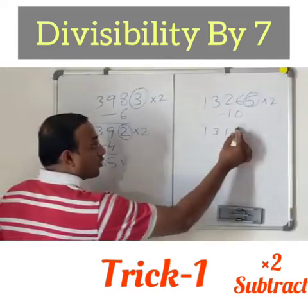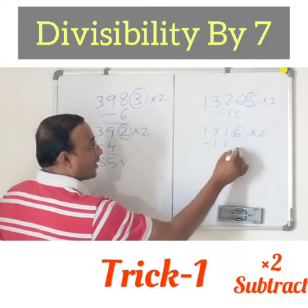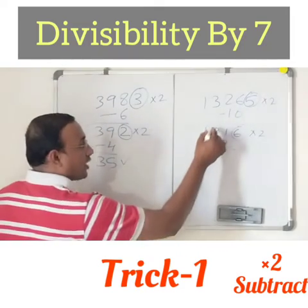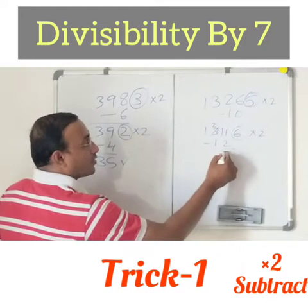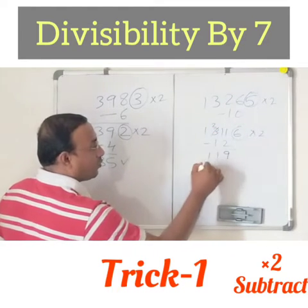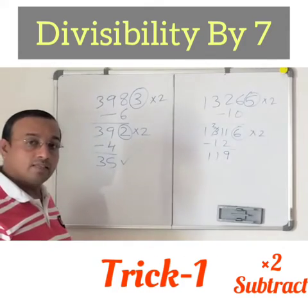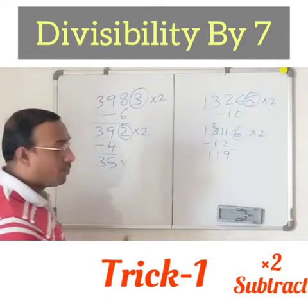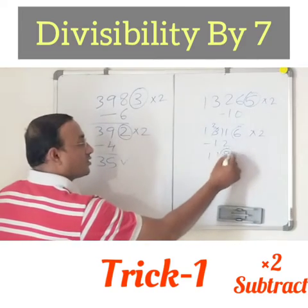As the number is still big, go with the process. Take the last digit and multiply by 2 — that is separate from the remaining digits. With the borrow, we get: 11 minus 2 is 9, 2 minus 1 is 1, giving us 119. Is 119 divisible by 7? Yes, it is divisible by 7. If you think it is still a big number, you can check by going with the process once again.